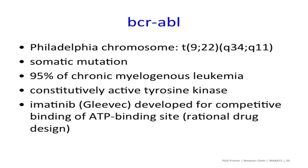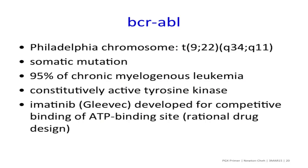BCR-ABL is the Philadelphia chromosome, involving a translocation from positions on chromosome 9 and 22, which when brought together as a somatic mutation cause dramatically increased risk of various hematologic cancers, including specifically 95% of chronic myelogenous leukemia. This leads to constitutively active tyrosine kinase activity. A specific targeted therapy, imatinib, was developed to competitively bind to the ATP binding site through rational drug design, and is dramatically therapeutic for treating patients with CML. It's a great example of the success of pharmacogenetics — recognizing the role that a somatic mutation plays in disease pathogenesis.